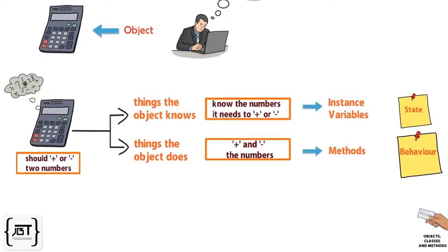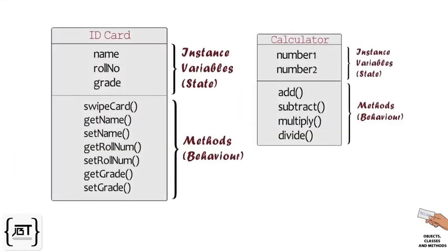Objects have state and behavior. State of the object is what object knows. Behavior is what object does. State is represented by instance variables and behavior by the methods.